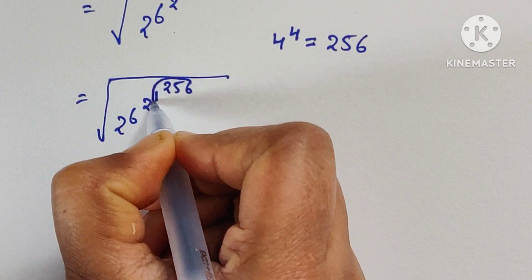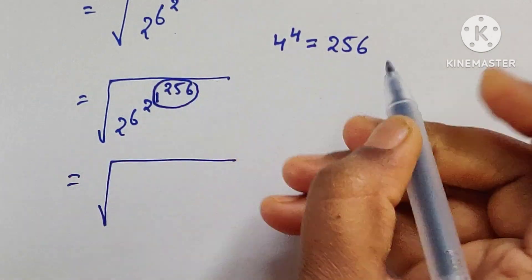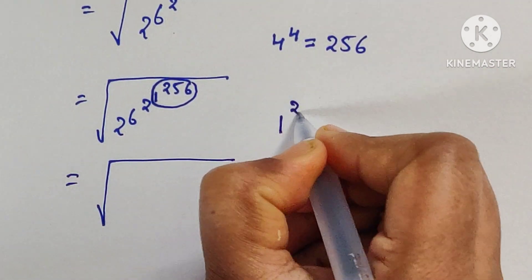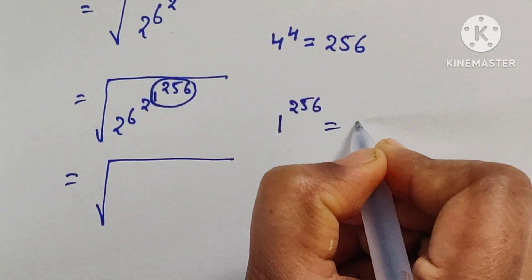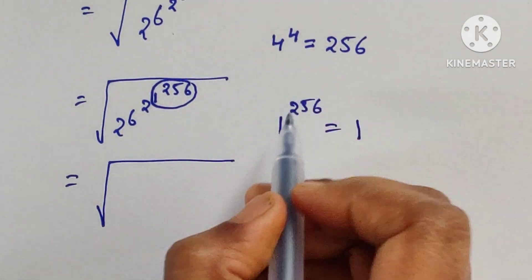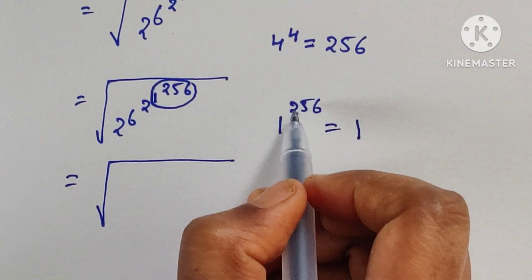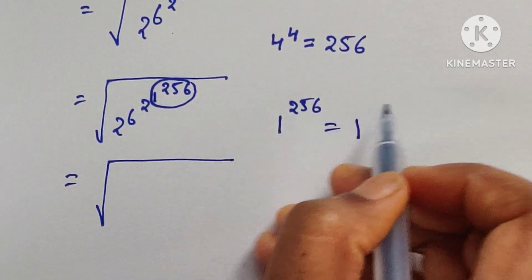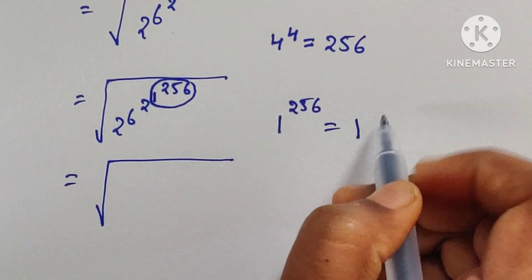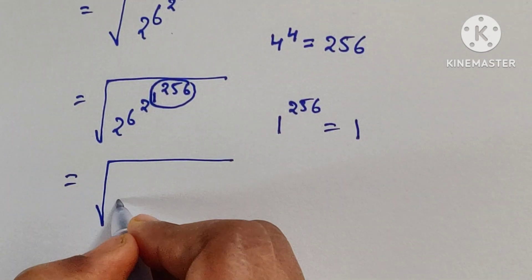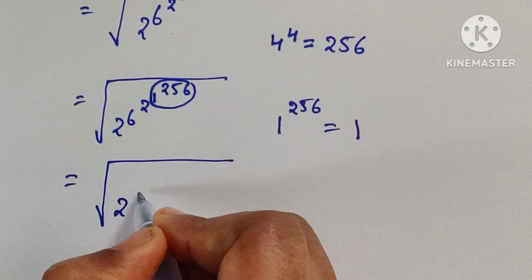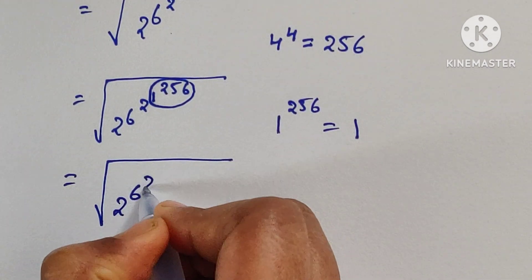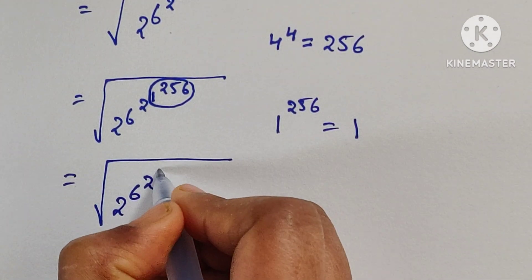Now compute 1 to the power of 256. 1 to the power of 256 equals 1, because 1 to the power of anything is always equal to 1.